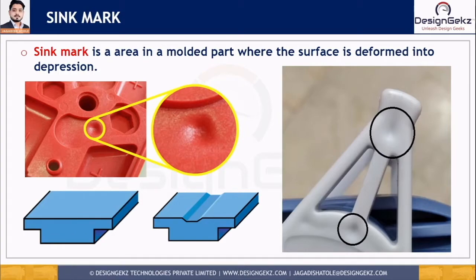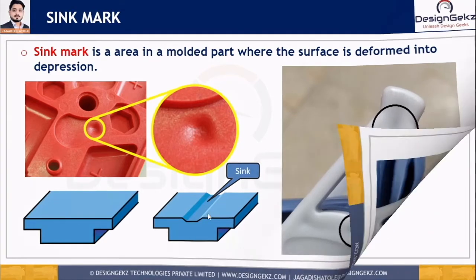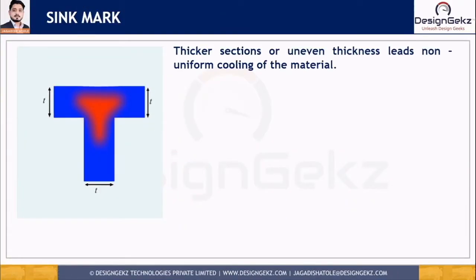This surface depression or sink basically occurs in the thicker section because of non-uniform cooling. Non-uniform thickness leads to non-uniform cooling, and that non-uniform cooling leads to the sink mark. This non-uniform cooling occurs during solidification, leading to internal stresses in the part that cause the part to sink or warp.